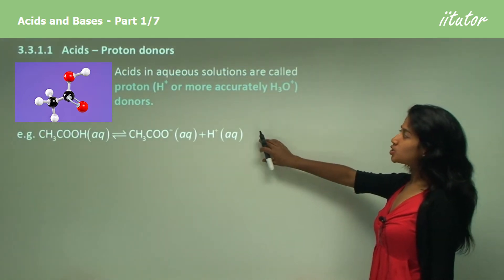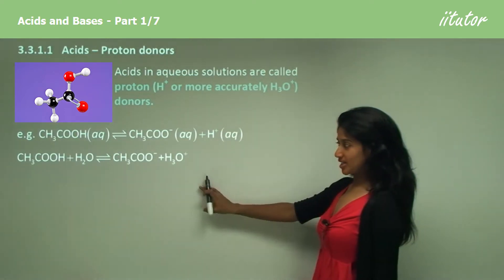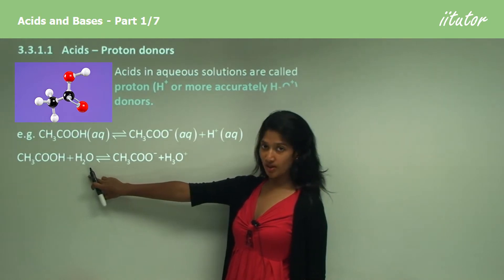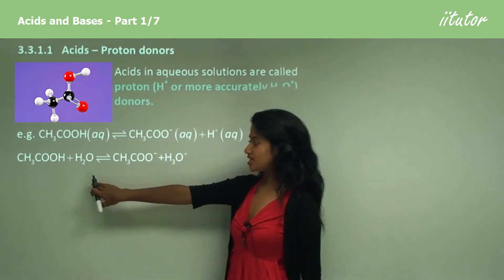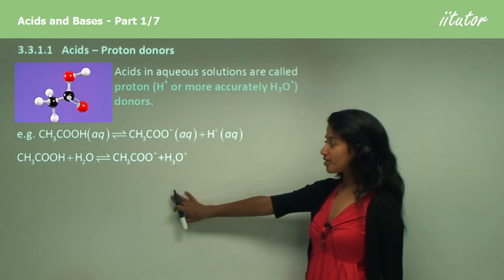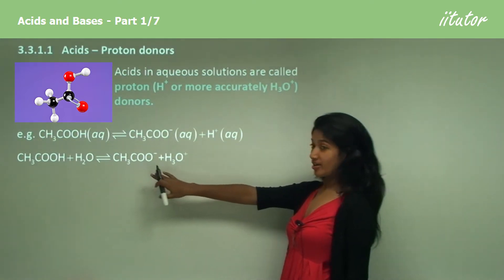But to be more correct, this is what really happens. The acetic acid reacts with water and in this reaction it ionizes, producing a hydronium ion and the acetate anion.